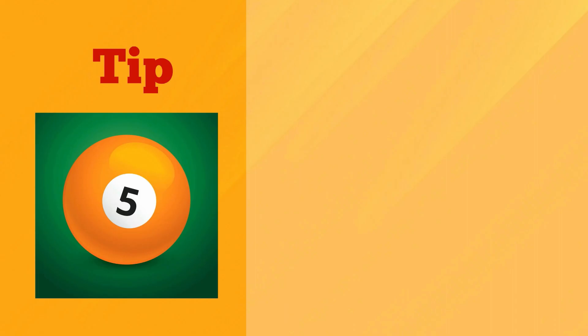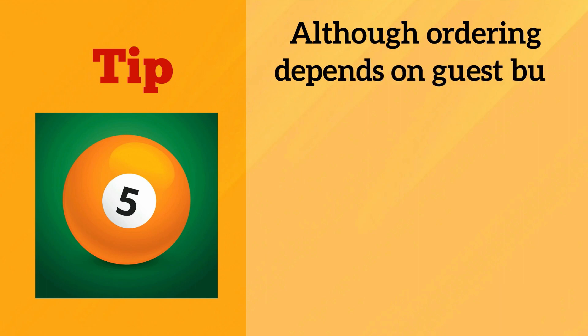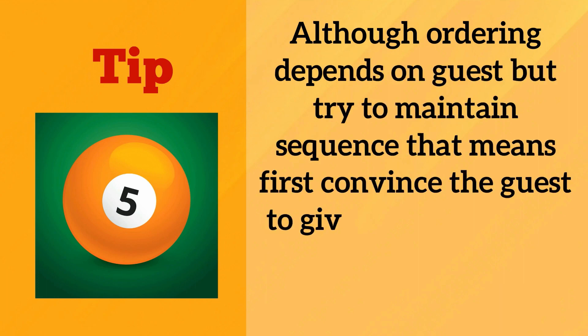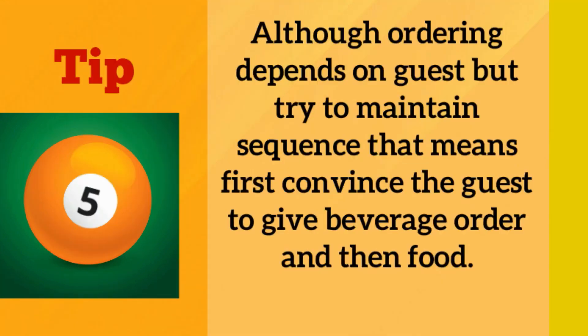Tip number 5: Although ordering depends on the guest, try to maintain sequence — that means first convince the guest to give beverage order and then food.